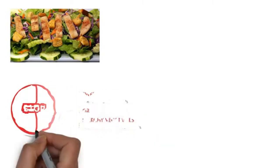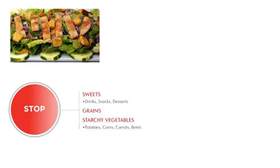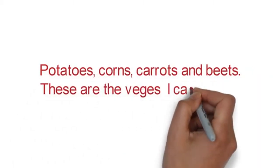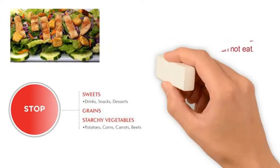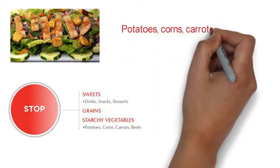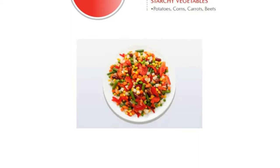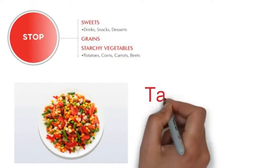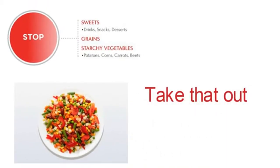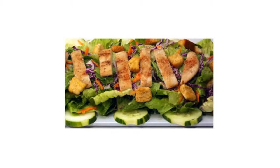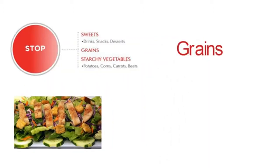So avoid the red light food. Looking at the vegetables in this salad, here's a simple way to remember the red light veggies: potato, corn, carrots, and beets — these are the veggies I cannot eat. Repeat that in your mind whenever you look at a vegetable. In this salad I can see carrots and corn, so I would scoop those out and set them aside.